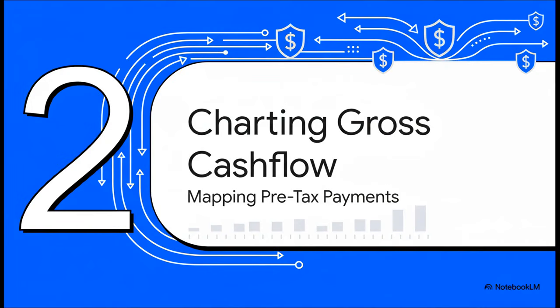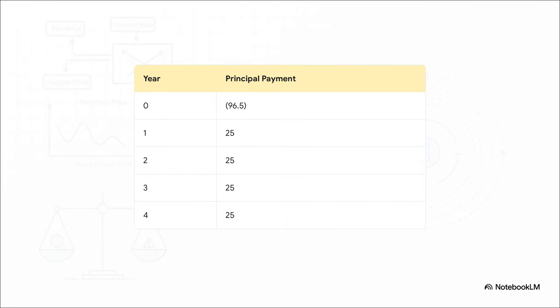First things first, we're going to map out every single dollar we expect to get before we even think about taxes. This is what's called the gross cash flow. It's the complete, unfiltered story of the bond's payments. Let's start building our timeline. At year zero, which is right now, we invest 96.5. That's cash going out, so we show it as a negative number. Then, because that 100 face value gets paid back in four equal chunks, we get 25 bucks back each year for the next four years. So far, so good. But where's the interest?